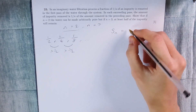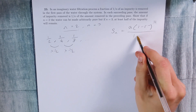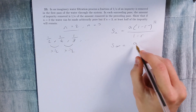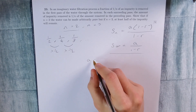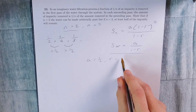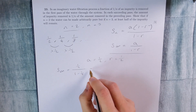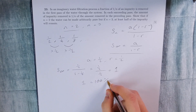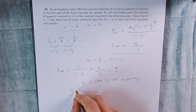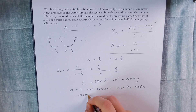The sum to the nth value is equal to a multiplied by 1 minus r to the n, divided by 1 minus r. The sum to infinity is equal to a over 1 minus r. As we're considering what we could theoretically do with an infinite number of passes, this is the formula we're going to use. Our first term a is equal to a half, and our ratio is also equal to a half. So the sum to infinity is equal to one half over one half, which equals one. Therefore, as a fraction of the impurity, one equals 100% of the impurity removed.